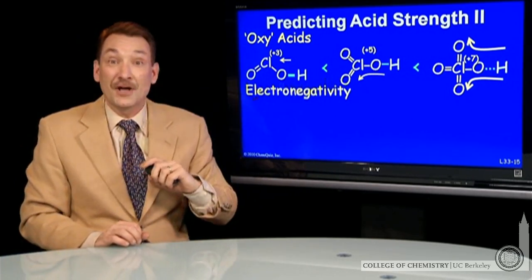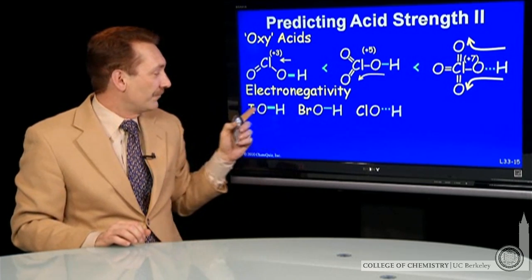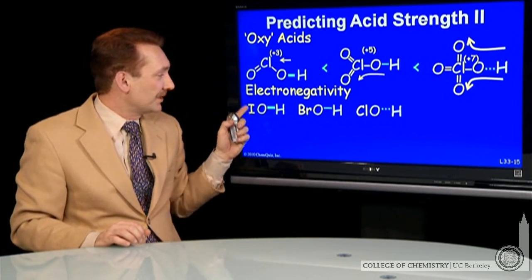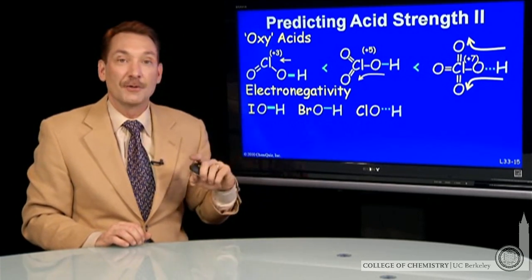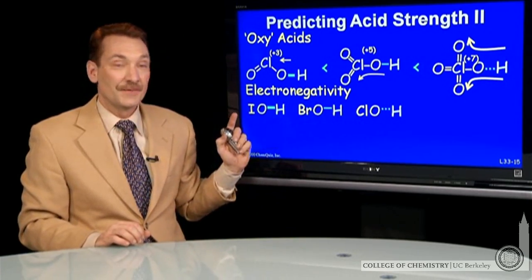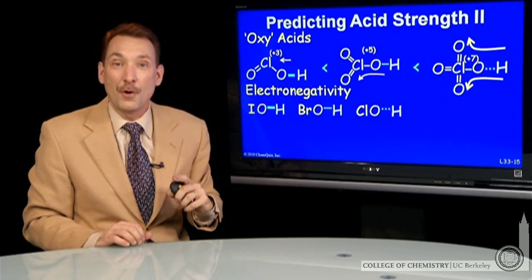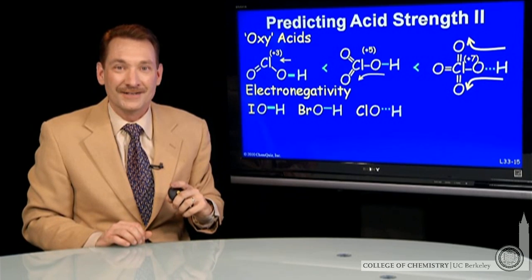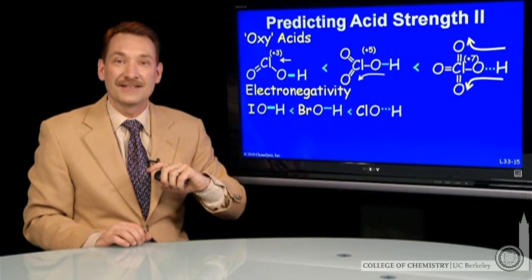Now, electronegativity is also a factor. Here's a sequence of acids where I'm going from a lower electronegativity to a higher electronegativity element, chlorine being the most electronegative in this series and the most electron withdrawing, which makes, again, this the most polar of the three bonds, the easiest to ionize, and hence the strongest acid.